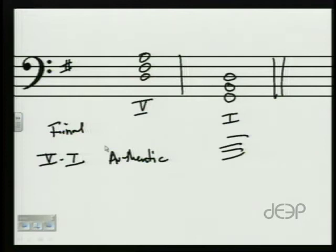Five to one cadence doesn't matter if it's major or minor. If it happened to be G minor, we'd have a B flat there. But that's our five to one cadence, a final authentic cadence.